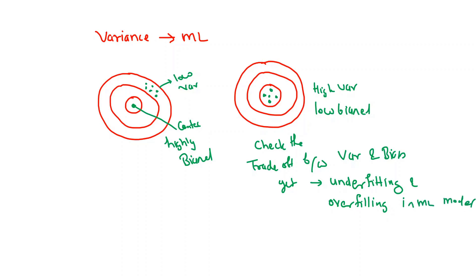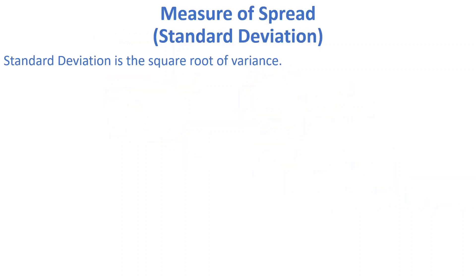We will discuss this in more detail when we cover machine learning models. Now, what is standard deviation? Standard deviation is the square root of variance.